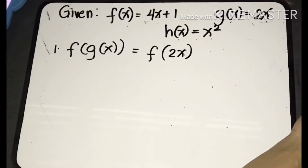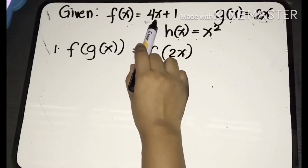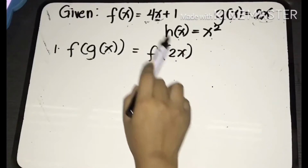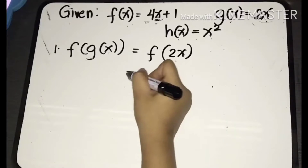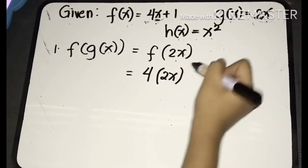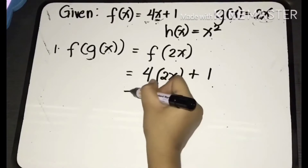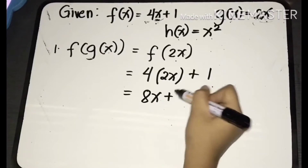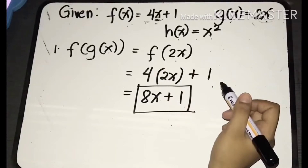Now look at the function f. You have the variable x, and what you're going to do is substitute 2x into the variable x of the function f. Substituting 2x, we'll have 4 multiplied by 2x plus 1. Simplifying, 4 times 2x equals 8x, and then positive 1. That is the answer for f of g of x: 8x plus 1.